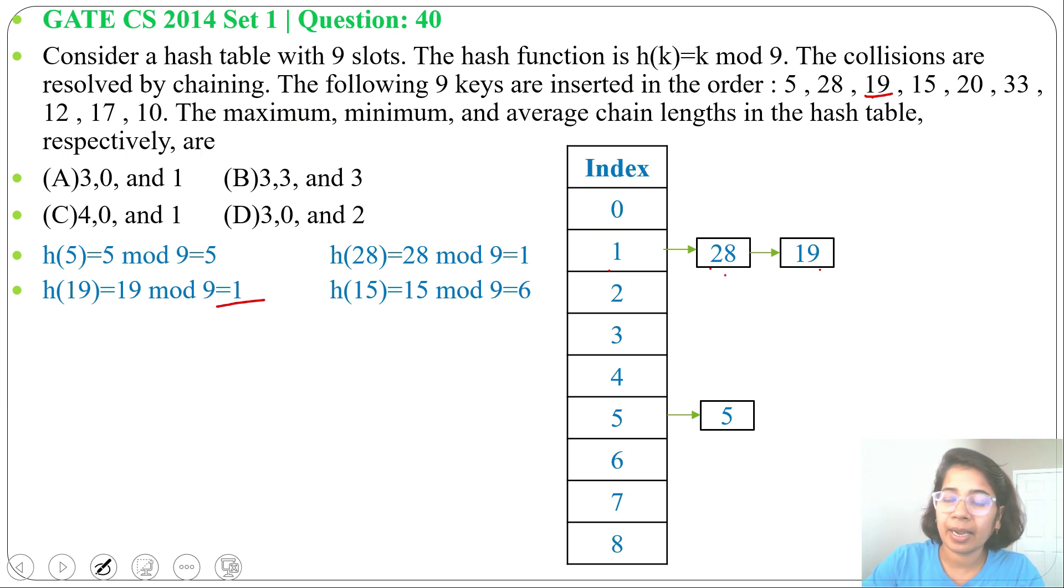Next, 15 divided by 9, remainder is 6. We'll insert 15 at index 6. Next, 20 divided by 9, remainder is 2. We'll insert 20 at index 2.